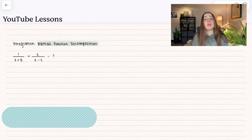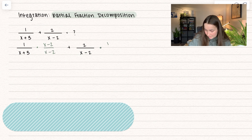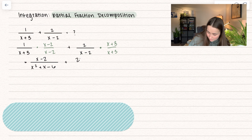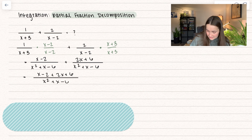Let's say we have two fractions and we want to combine them. In order to combine them, we need to create a common denominator. So I'm going to multiply this one by (x minus 2)/(x minus 2), and the right one by (x plus 3)/(x plus 3). Multiplying through, the numerator becomes (x minus 2) plus (2x plus 6), all over x squared plus x minus 6, which simplifies to (3x plus 4) divided by that denominator.